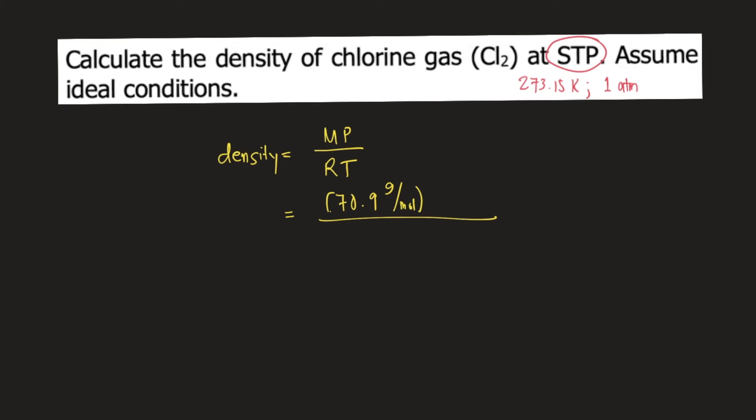Multiplied by the pressure, the standard pressure is 1 atm, divided by R, the gas constant, 0.0821 liter atmosphere per mole Kelvin, times the temperature in Kelvin, which is 273.15, the standard temperature.